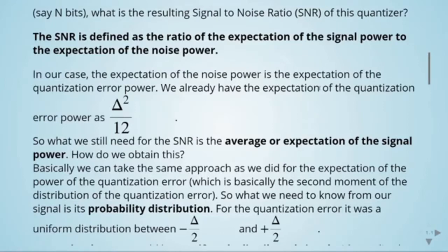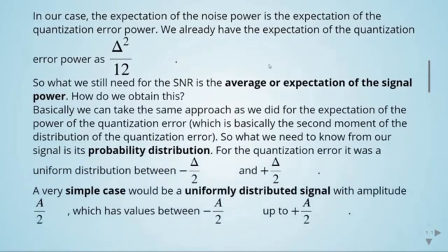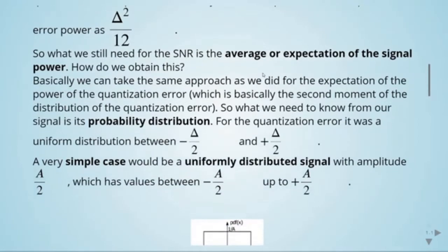To obtain the expectation of the signal power, we take the same approach as for the quantization error — which is basically the second moment of the distribution. So what we need to know is the probability distribution of our signal. For the quantization error it was a uniform distribution between minus step size divided by 2 to plus step size divided by 2.